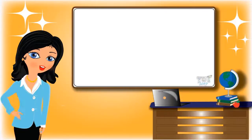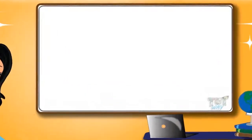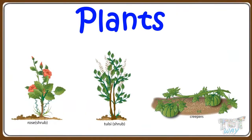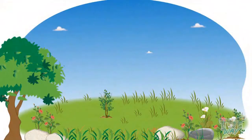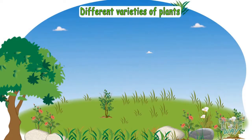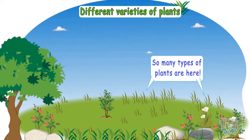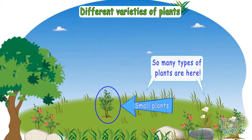Hi kids, today we will learn about plants, so let's start. Kids, let's go to the garden today to see different varieties of plants. Look, so many types of plants are here. Some are very small plants and some are big.